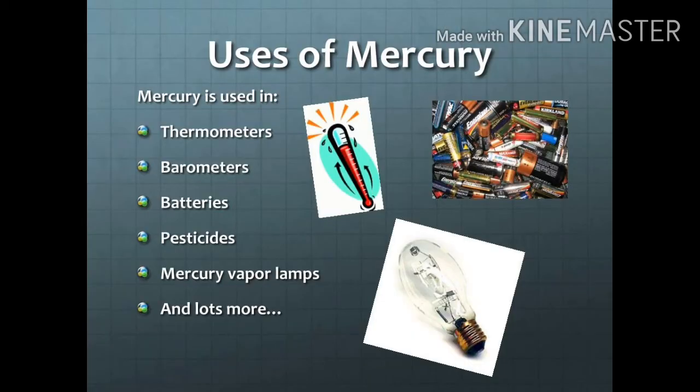Next, mercury. Mercury is used in thermometers, barometers, batteries, pesticides, and mercury vapor lamps. Thermometers measure temperature and barometers measure air pressure. In all these instruments, mercury is in liquid form, indicating temperature or air pressure. Mercury vapor lamps also use mercury.